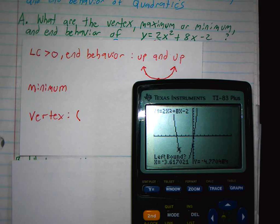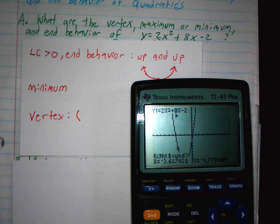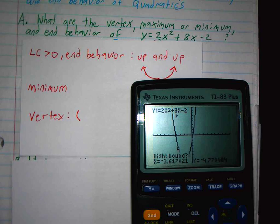Notice it says now, what is the right bound? So I'm going to go to the right of the vertex, anywhere on the right. You could go way over to the right if you wanted to. Using the right arrow key.